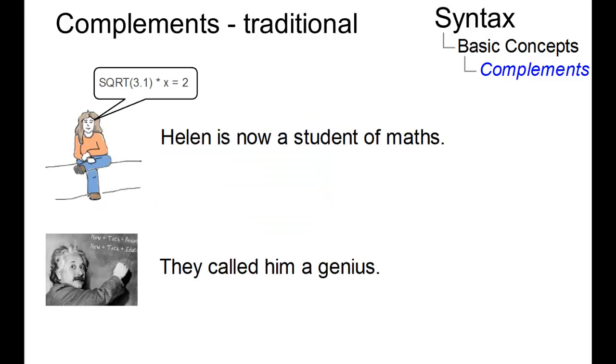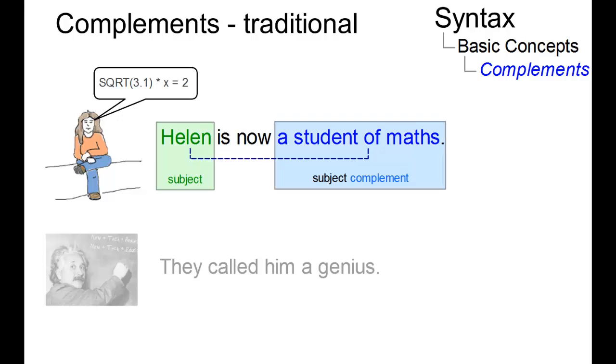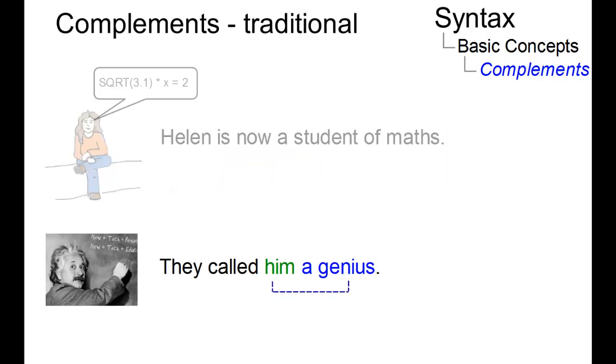Here are two examples. In 'Helen is now a student of maths,' a student of maths is a subject complement. Whereas in 'they call him a genius,' a genius is the object complement.